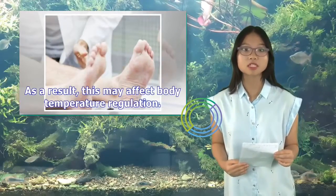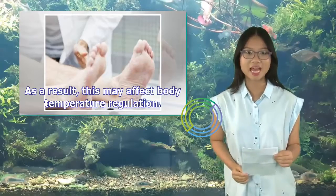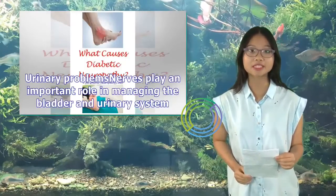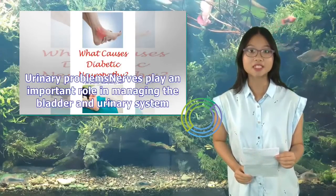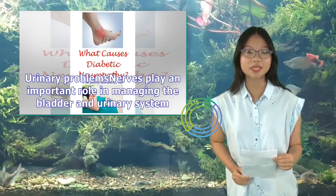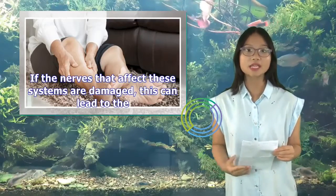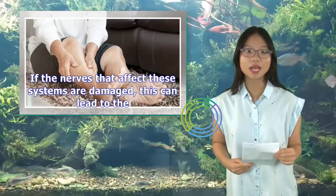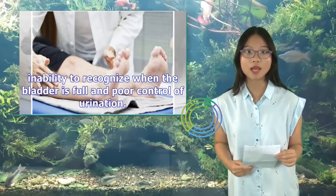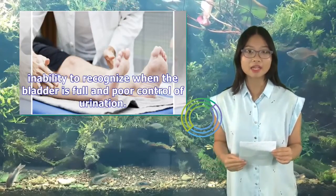Excess sweating may affect body temperature regulation. Urinary problems: nerves play an important role in managing the bladder and urinary system. If the nerves that affect these systems are damaged, this can lead to the inability to recognize when the bladder is full and poor control of urination.